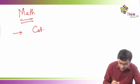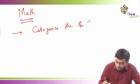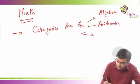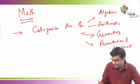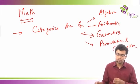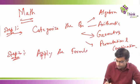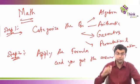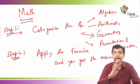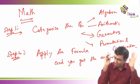The way I have modeled this entire session is very similar to the way you solve mathematics questions. In a math question, you first categorize the question — you identify whether it is algebra, arithmetic, geometry, permutation and combination — before applying the formula. Step one: categorize the question. Step two: apply the formula and get the answer. These are the two steps in any mathematics question. A very similar process we are going to follow in RCs. It is a three step process.